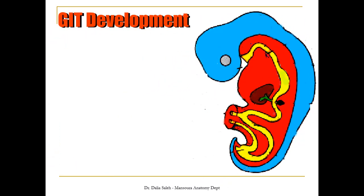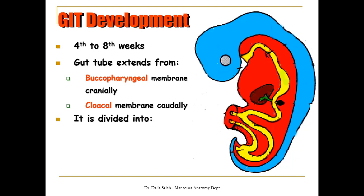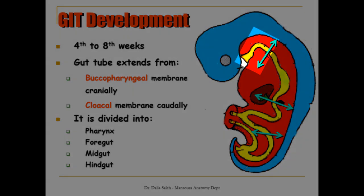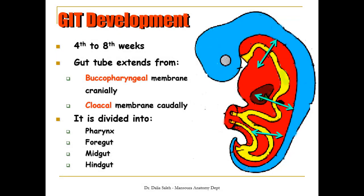In this sagittal section of the embryo, we can see the gut tube here, colored in yellow. The gut tube is formed from the fourth to the eighth weeks of development. It extends from the buccopharyngeal membrane cranially to the cloacal membrane caudally, and is divided into the pharynx, the foregut, the midgut, and the hindgut. In this presentation, I'm going to focus on the development of the foregut and its derivatives.